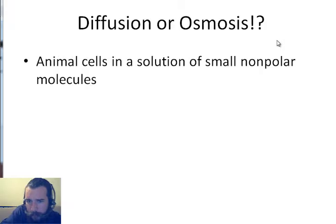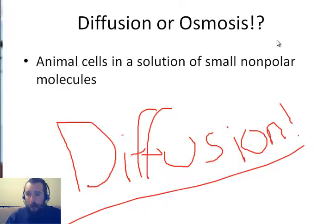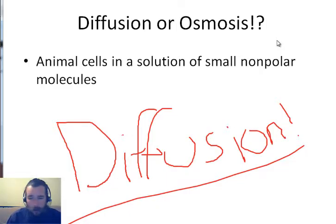Animal cells in a solution of small non-polar molecules — what do you say? Correctamundo, it's diffusion. Just like small molecules can go through the plant cell, they can also go through the animal cell because they all have the same eukaryotic cell membrane.